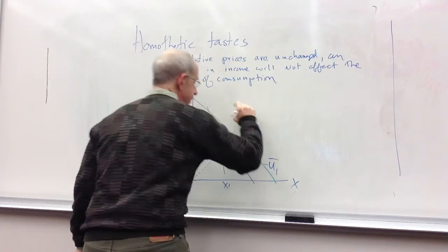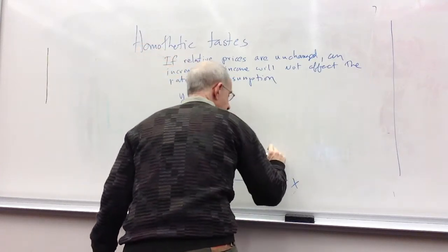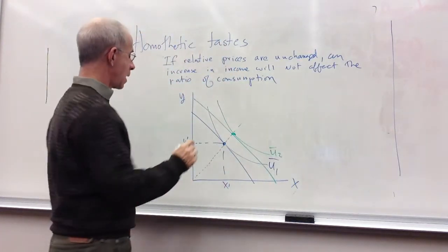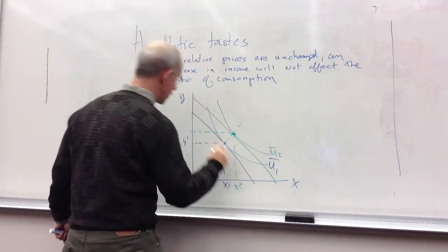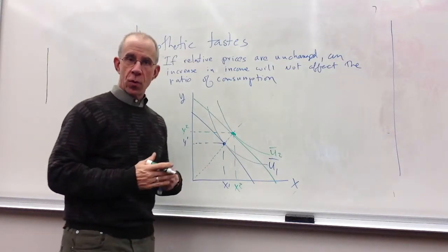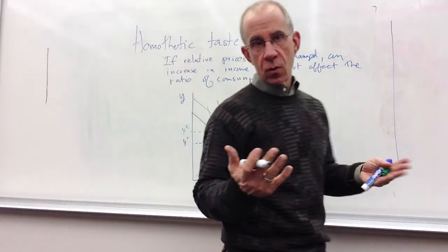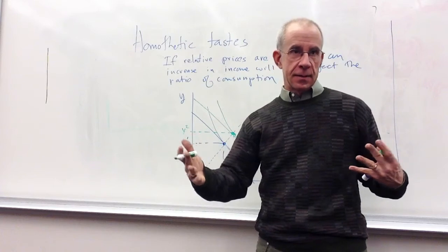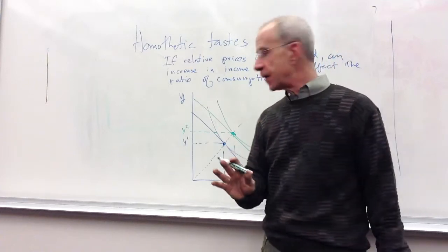The homothetic taste says that they buy more of both things in a particular way. In particular, the consumption is going to go up by the same proportion. Now, for those of you who've had intermediate micro, you're basically talking about an income expansion path that's constant or that's linear through the origin.